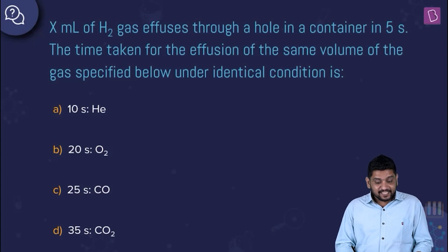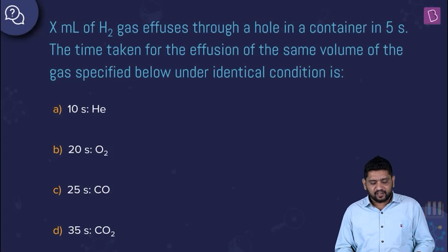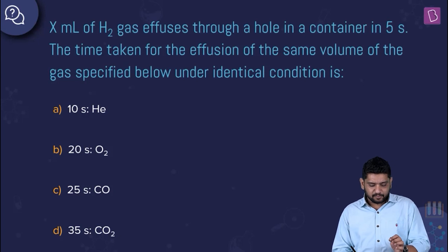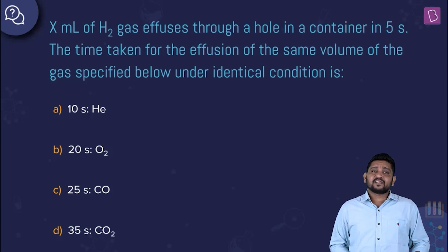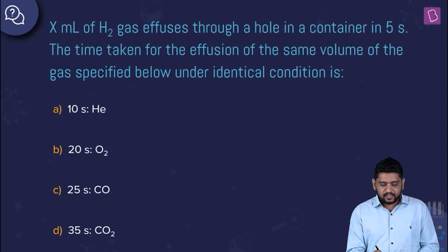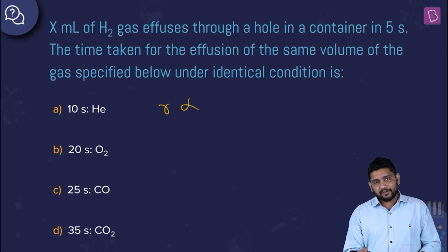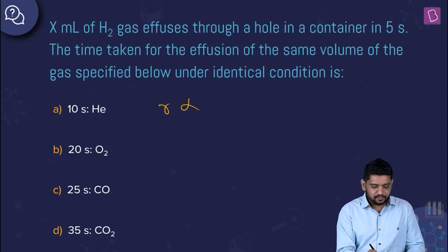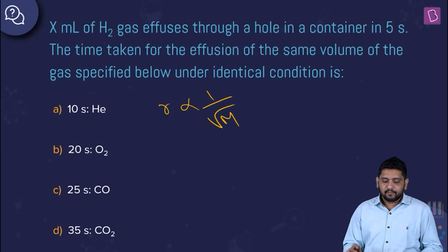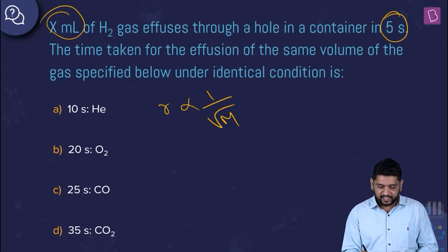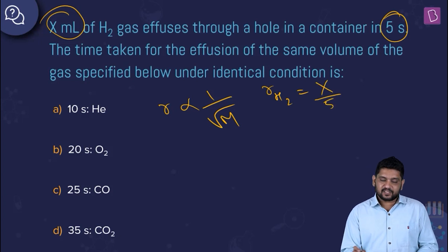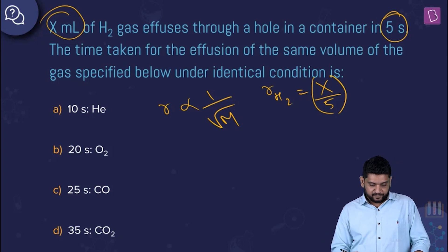This question says x mL of hydrogen gas diffuses through a hole in a container in 5 seconds; find the time taken for effusion of the same volume of another gas under identical conditions. Identical conditions means pressure, temperature, and hole size are the same, so the rate is inversely proportional to the square root of molar mass. The rate of hydrogen is x/5 mL per second.